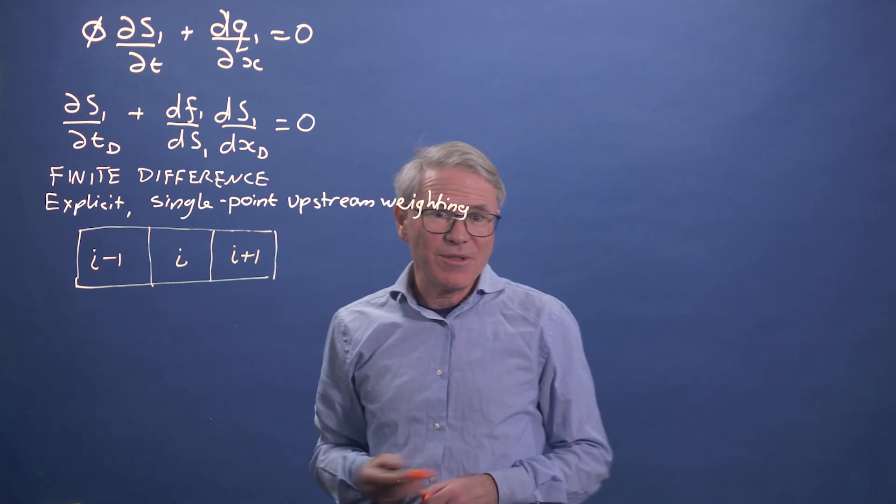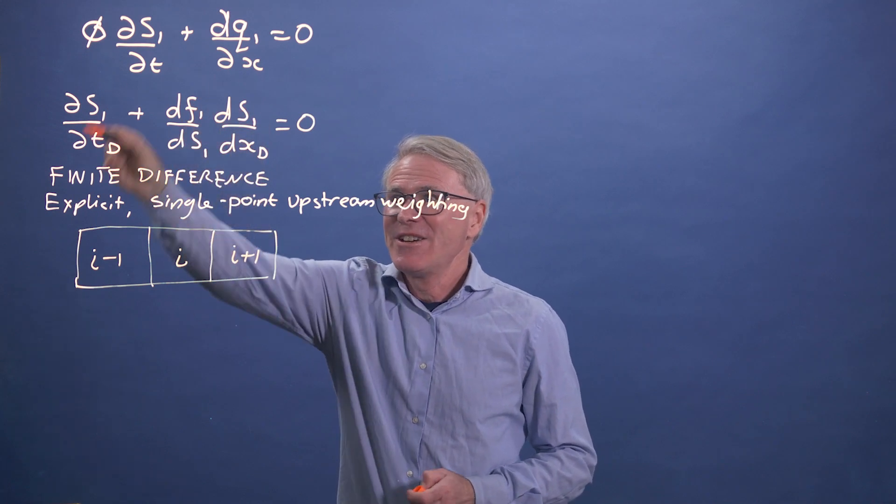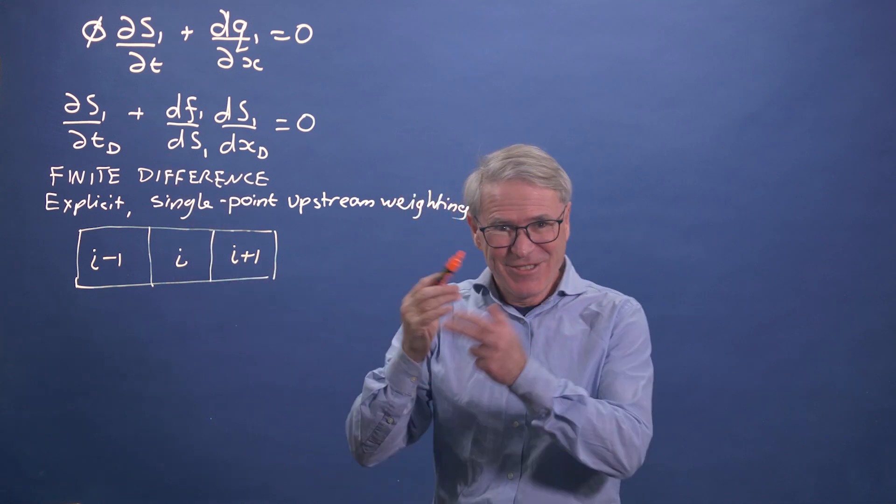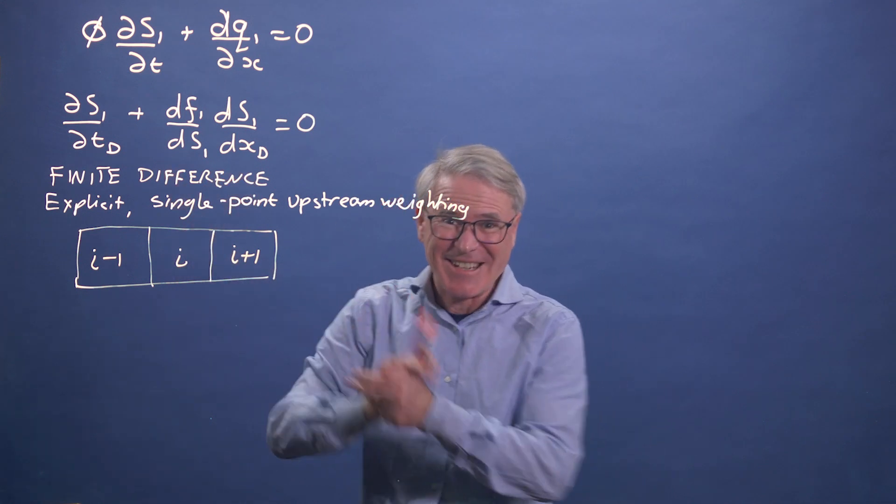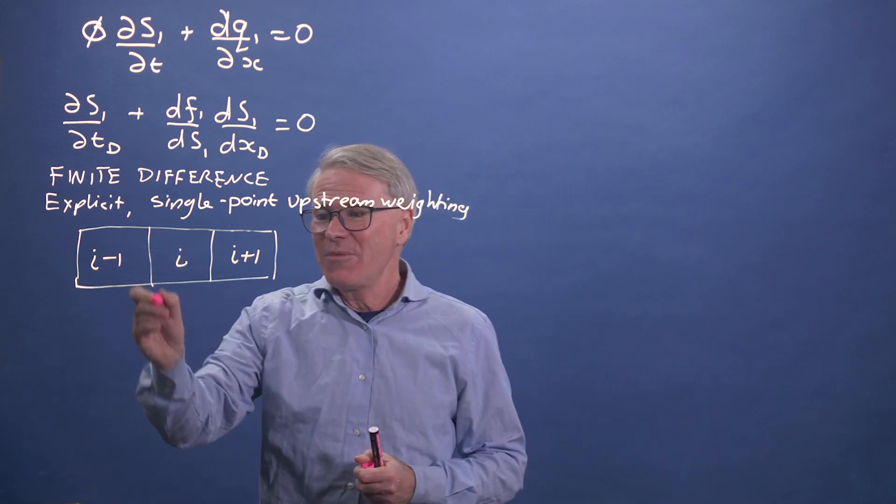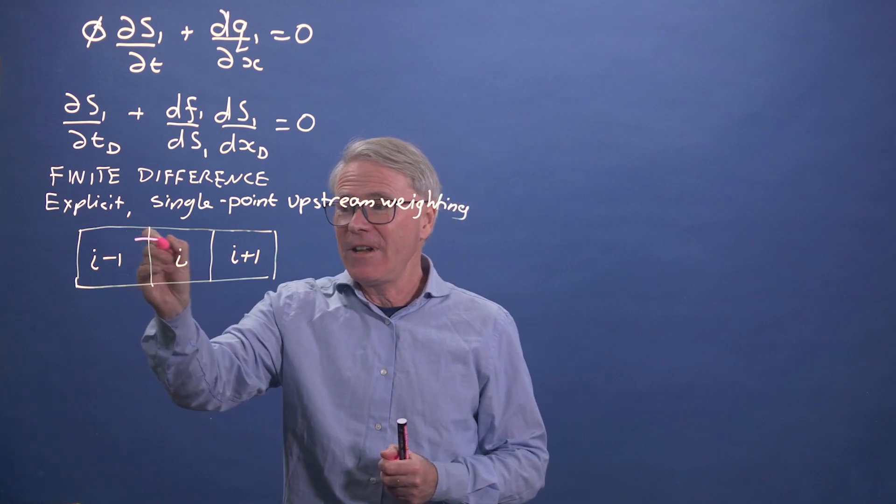And what we're going to do is we're going to apply essentially conservation of mass, but in this discretised form or in a discretised form in grid blocks. So how do we go about this? Well, we can imagine we have this grid block i and there is a flux in.